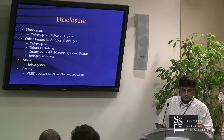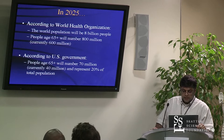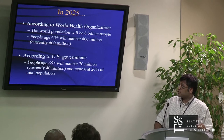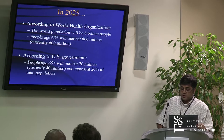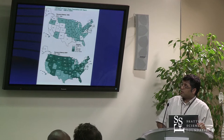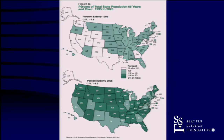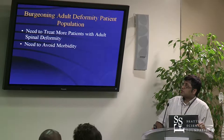According to the World Health Organization, in 2025 we're going to have 8 billion people in the world and 800 million of them are going to be over age 65. Of that number, 70 million will be living in the United States — almost double what the number of age over 65 folks was just about 15 to 20 years ago. So that's a huge number of people, and we're going to have to need to treat more patients with adult spinal deformity.